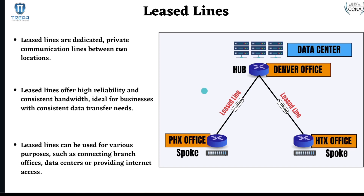The first thing we're going to go over is leased lines. Leased lines are dedicated private communication lines between two locations — mainly copper lines — and they offer high reliability with consistent bandwidth. They're not shared; if you're getting a leased line, you have 24 channels that belong to you and nobody else. This consistent bandwidth was ideal for businesses doing a lot of credit card and debit card transactions back in the early 2000s — ATM machines, point-of-sale systems — where they needed reliability but not a lot of throughput.